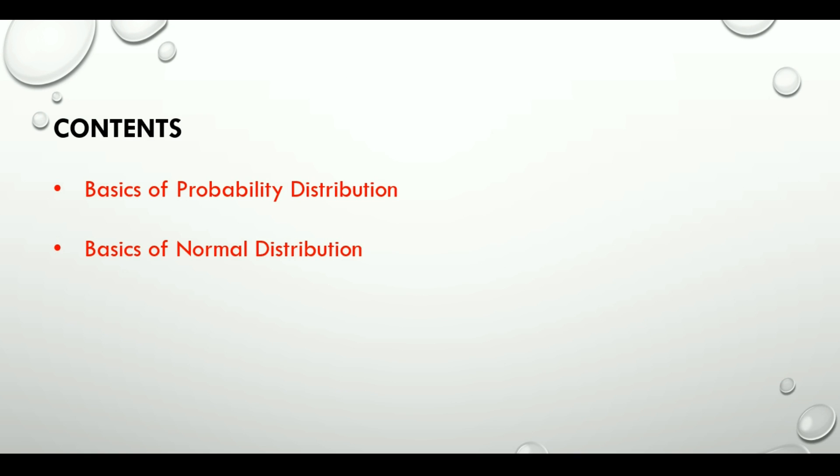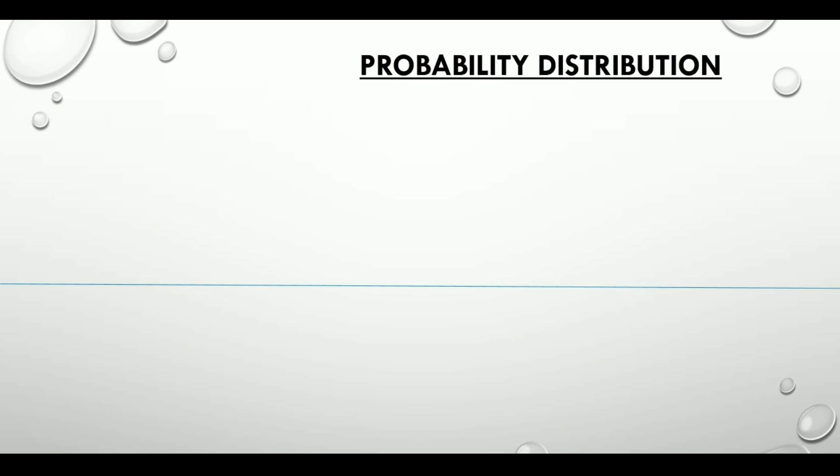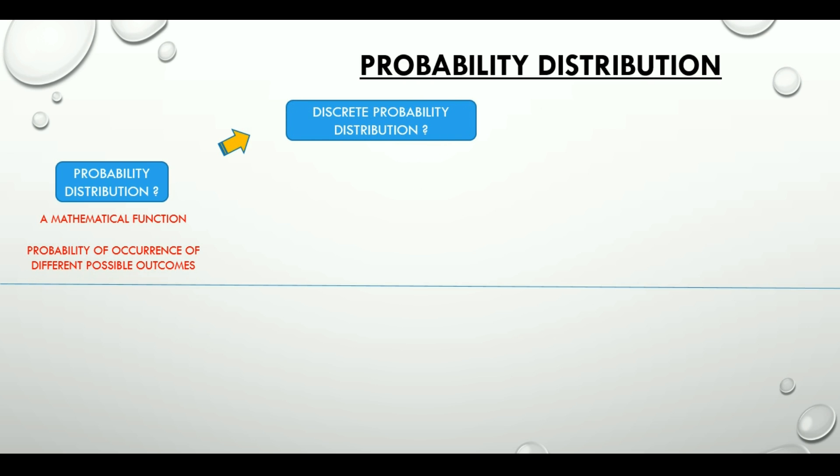Before we actually look at a normal distribution, let's know a little bit about probability distributions. What is probability distribution? It is a mathematical function. It gives the probability of occurrence of different possible outcomes. Such distributions are of two types, discrete probability distribution and continuous probability distribution.